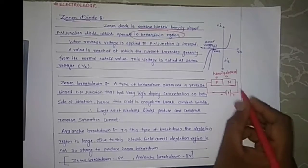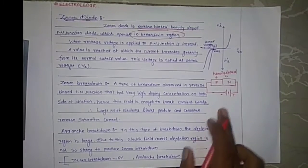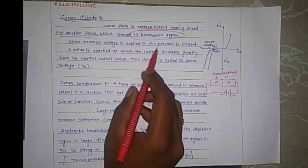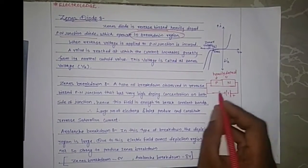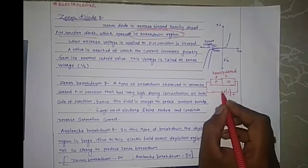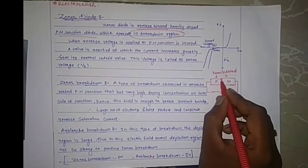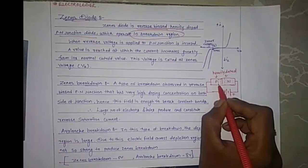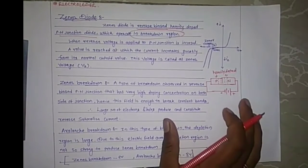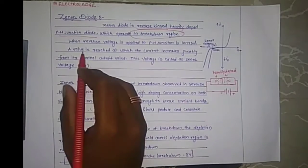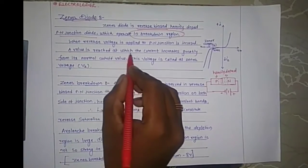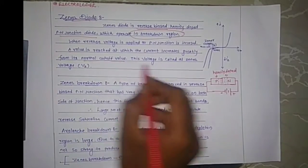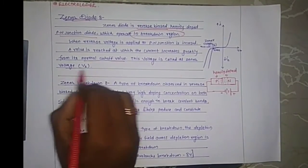This becomes a reverse bias circuitry of the Zener diode. When a reverse voltage is applied, the depletion layer of the PN junction increases. A value is reached at which the current increases greatly from the normal cutoff value. This voltage is known as the Zener voltage.